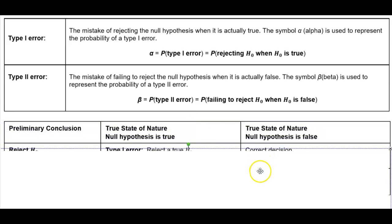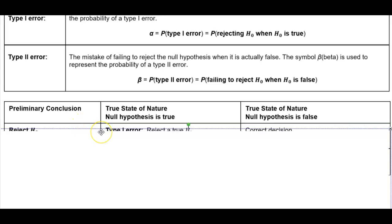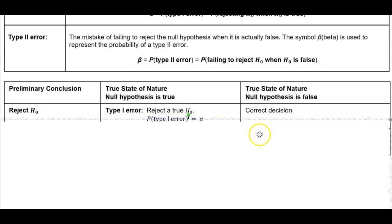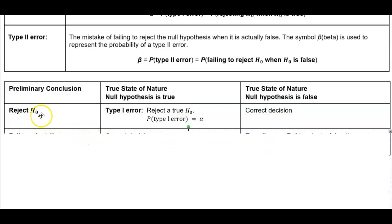Here is a table showing the preliminary conclusion versus the true state of nature — whether the null hypothesis is true or false. If we reject the null hypothesis and the null hypothesis is true, then it is a type 1 error — we reject a true null hypothesis — where the probability of the type 1 error is equal to alpha. If the null hypothesis is false, that would be the correct decision.